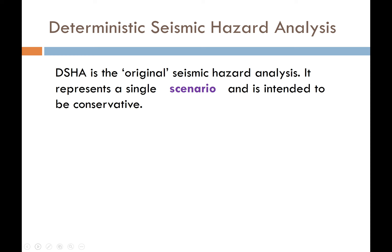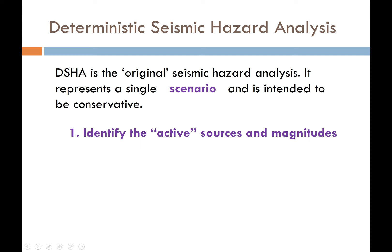The steps to a deterministic seismic hazard analysis: first, we need to identify all of the active sources and magnitudes. How do we define what an active seismic source is? Typically we say it's active if the source has moved in the last 10,000, 100,000, or a million years — but who makes that decision? Depending on the importance of what we're designing, that's going to affect what we call an active source. We would then use equations like the Wells and Coppersmith equation to predict magnitudes for each source.